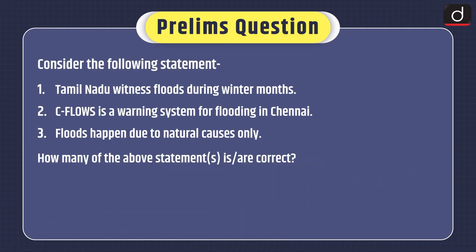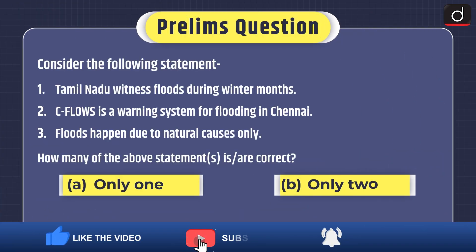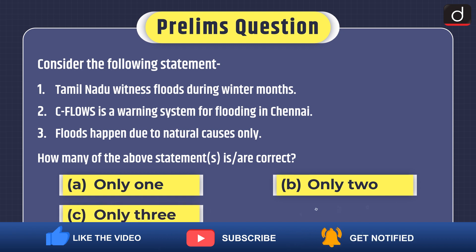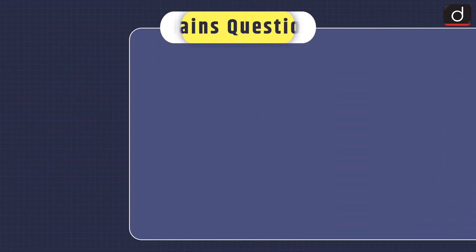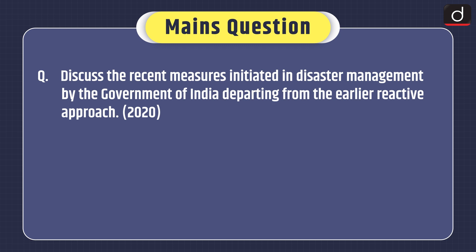For the practice prelims question — consider the following statements: 1. Tamil Nadu witnessed floods during winter months. 2. SEAFLOWS is a warning system for flooding in Chennai. 3. Floods happen due to natural causes only. How many of the above statements are correct: only one, only two, only three, or none? The mains question: Discuss the recent measures initiated in disaster management by the Government of India, departing from the earlier reactive approach.